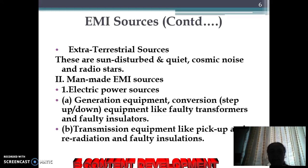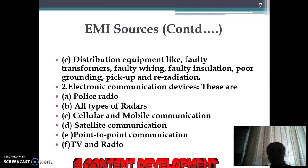The main man-made EMI sources include generation equipment and transmission equipment such as pickup and pre-radiation and faulty insulations, transformers, etc. Distribution equipment includes faulty transformers, wiring, insulation, over-grounding, and pickup and re-radiation.